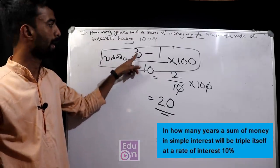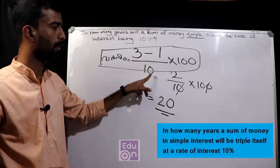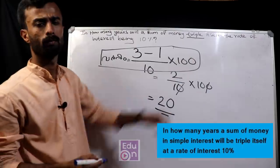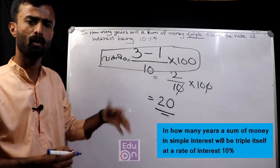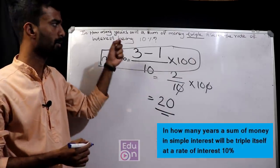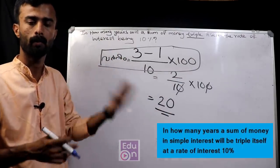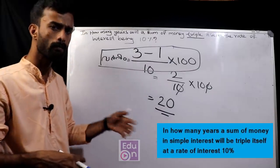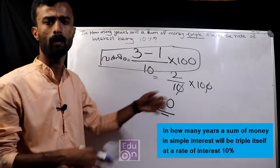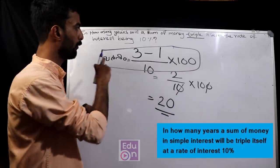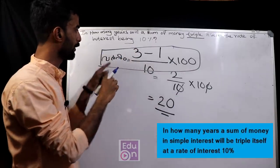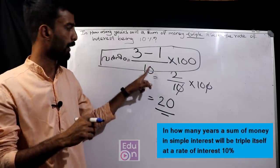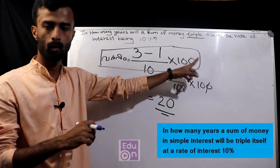The formula is: years (Varsham) = (n minus 1) divided by rate percentage, into 100. This is the method and format we use for these types of simple interest problems.